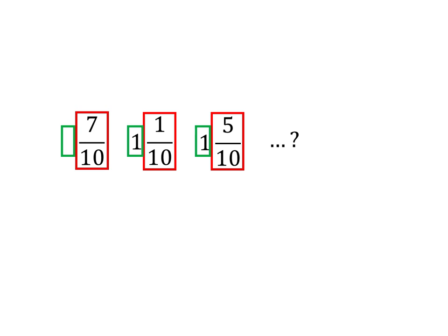How do we get from 7 tenths to 1 and 1 tenths? Well, to increase the whole number part by 1, we need to add 3 tenths. Then to get the remaining 1 tenths fraction, we need to add another tenths.